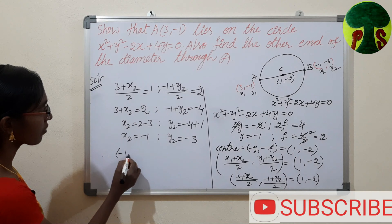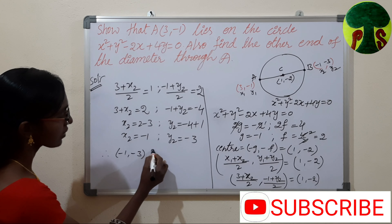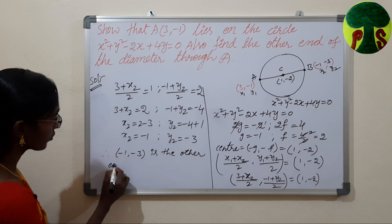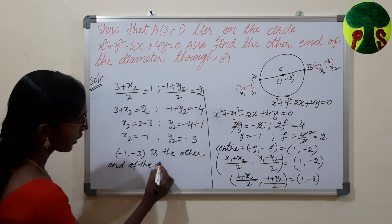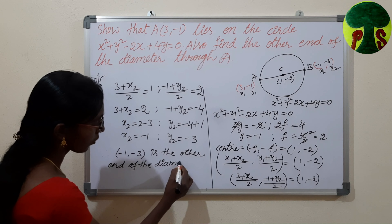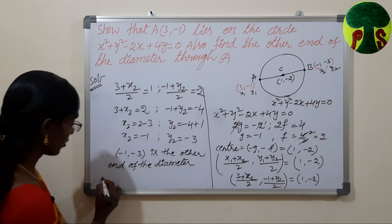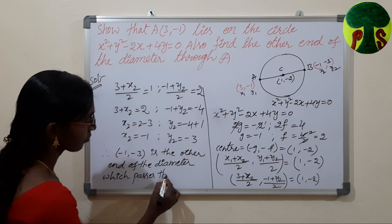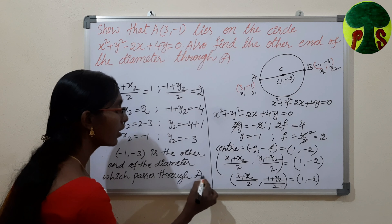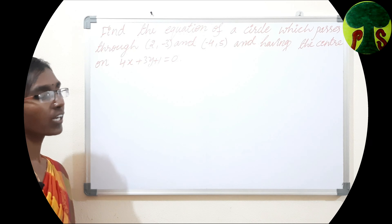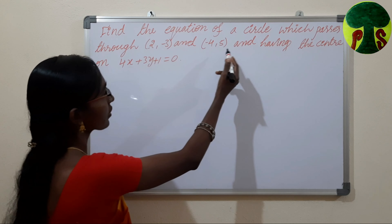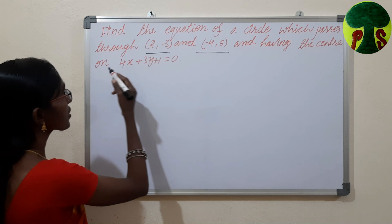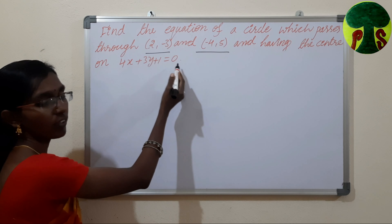Therefore (minus 1, minus 3) is the other end of the diameter which passes through A. This is the required solution. Let us solve a different problem: find the equation of a circle which passes through (2, minus 3) and (minus 4, 5), and having its center on 4x plus 3y plus 1 equals 0.